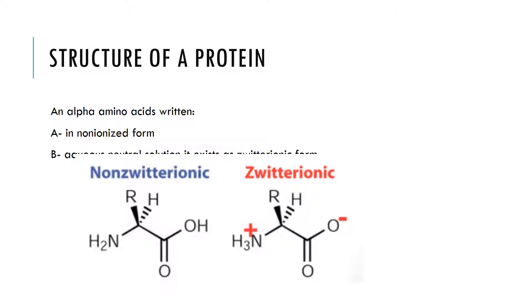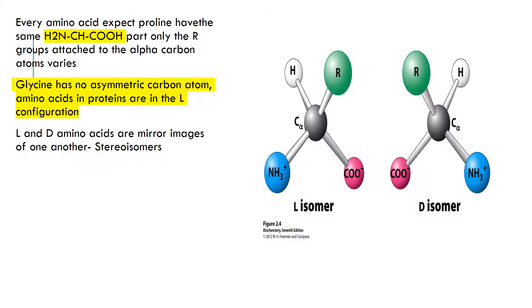So, the structure of a protein. An alpha amino acid can be written in a non-ionized form, as shown in this picture here. And also, you can find it in the aqueous neutral solution — in a zwitterion form — where you can see the NH3+ charge and the COO- charge. Every amino acid except proline has the same H2N-CH-COOH backbone, with the alpha carbon and the specific R groups attached to the alpha carbon.